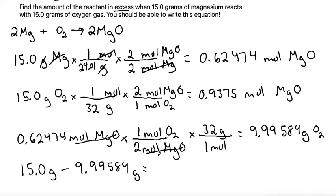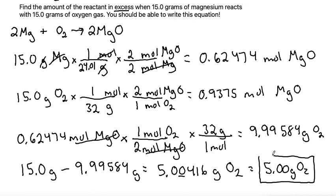And in my calculator, I get that to be 5.00416 grams of oxygen would be left over. And to round this final answer to my sig figs, I have three sig figs in the problem, so I'll round to three sig figs, and that gives me 5.00 grams of oxygen would be what is left over after the reaction is complete.